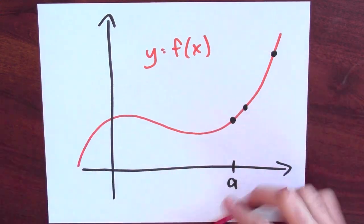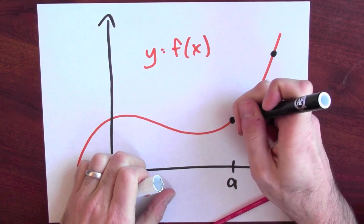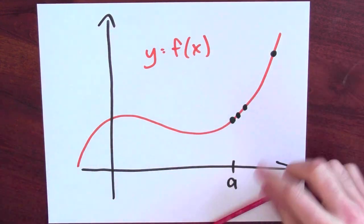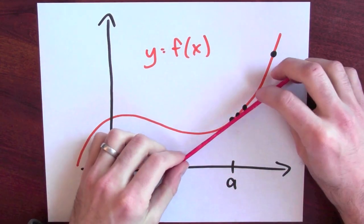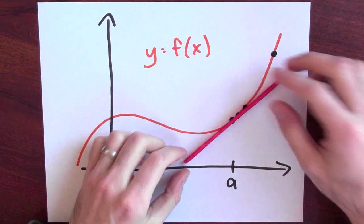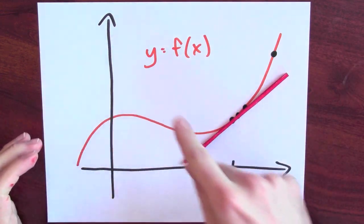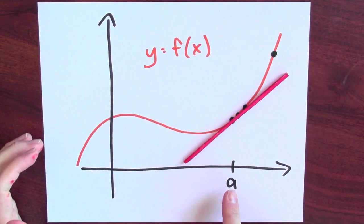And I can do better and better. By taking a limit, by putting those two points closer and closer together, I can get my secant line to be a better and better approximation to the orange curve near the point A.